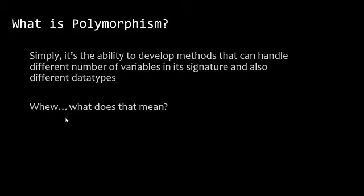Simply put, it's the ability to develop methods that can handle different numbers of variables in its signature and also different data types. What we're saying is that we can develop a method that, based upon what is sent to it — how many different types of arguments — we can make one method morph into doing many things based upon what the application programmer sends us.